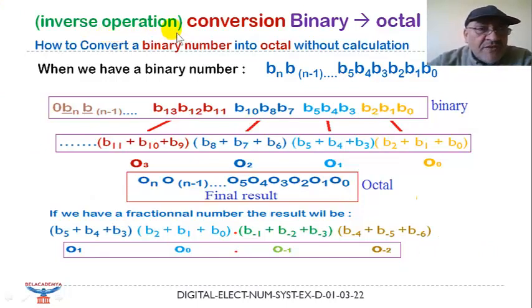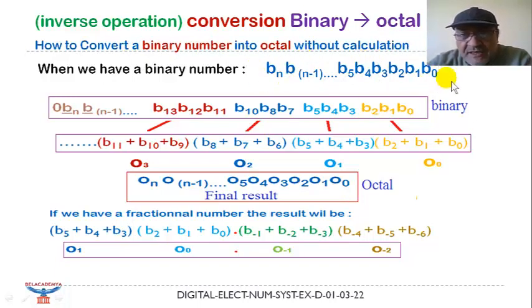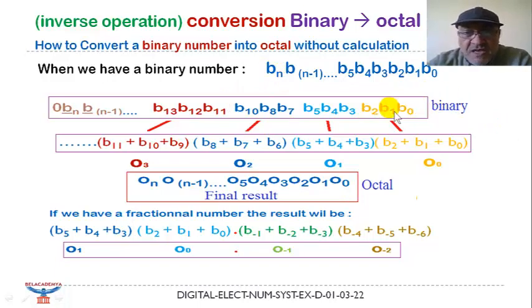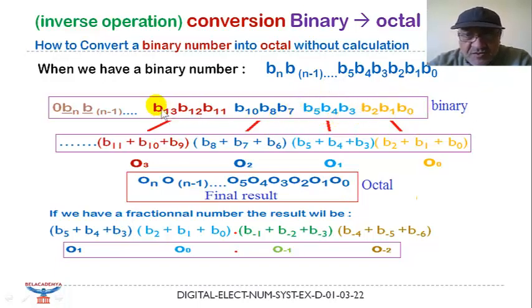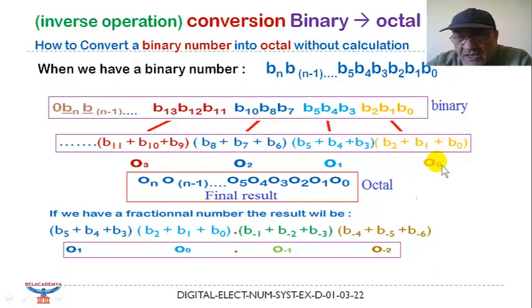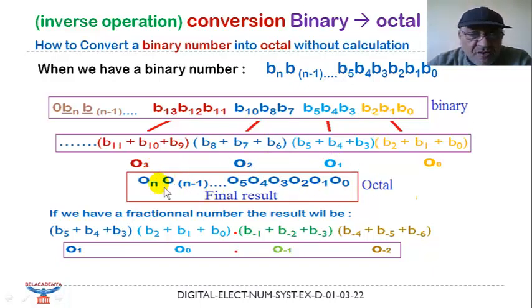Now we have to make the inverse operation: conversion from binary to octal. The question is how to convert a binary number into octal without calculation. If we have a binary number, the leftmost bit is the most significant bit and the rightmost is the least significant bit. We make groupings of three bits — the first group of three bits, the second group of three bits, and so on. We then make the sum of each three-bit group, and the result gives us the octal number digits.